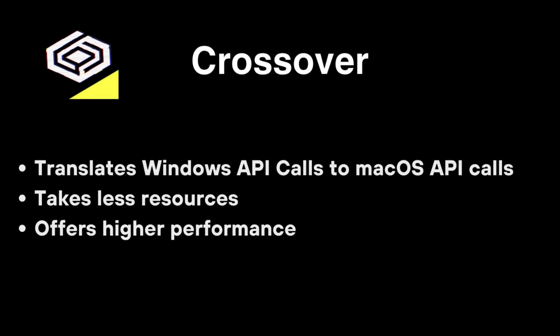Parallels and VMware are very alike, unlike CrossOver. Technically, CrossOver translates Windows API calls to macOS API calls — it takes less resources and generally offers higher performance in theory. However, CrossOver is constantly translating APIs, and that takes a lot of resources, especially if you have an 8GB RAM MacBook. Trust me, you do not want only 8GB RAM for all this kind of stuff.